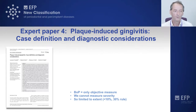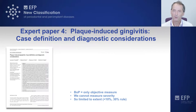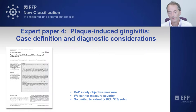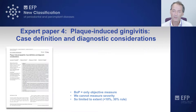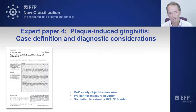Expert paper four was about case definitions, and it was particularly important because it concluded that we needed to use something very objective for measuring gingival inflammation and gingivitis. The only really objective measure we have — and it has limitations — is bleeding on probing. We went with bleeding on probing as our measure of gingival inflammation. Measuring severity of inflammation wasn't really possible because that requires assessment of swelling and color change, which is incredibly variable from one assessor to the next.